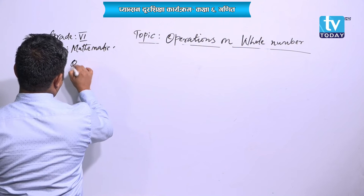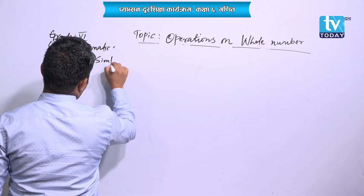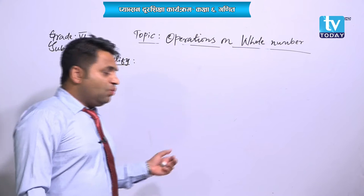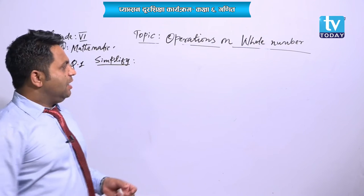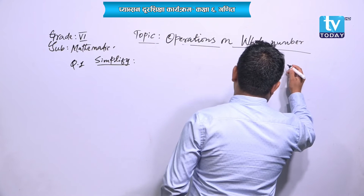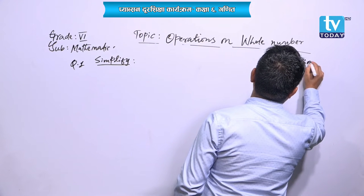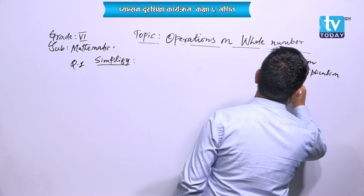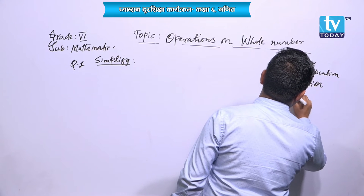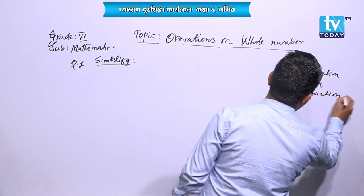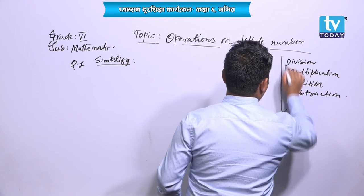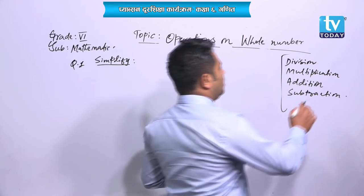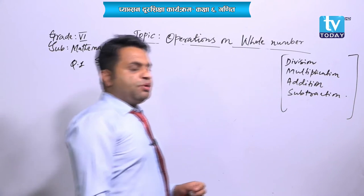Now, simplify questions. Simplify means we have to find the solution in simplest form by using these operations — division, multiplication, addition, and subtraction. We have to use all the signs in the proper way.